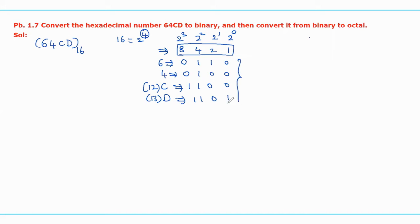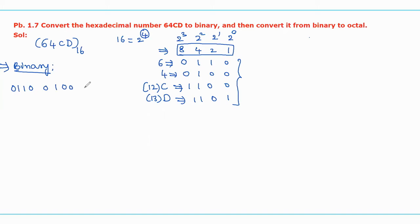These are the corresponding binary values of each digit of the hexadecimal number. So the equivalent binary value for the given hexadecimal number 64CD is 0110 0100 1101, with base 2. This is the equivalent binary for the given hexadecimal number.